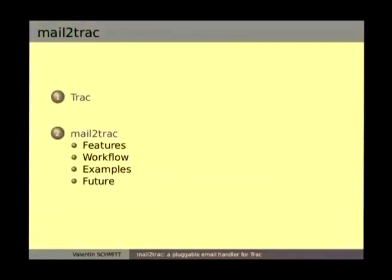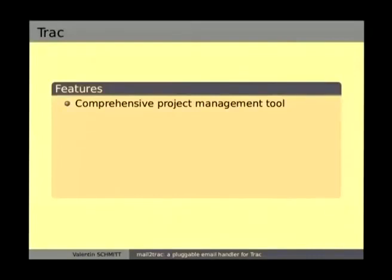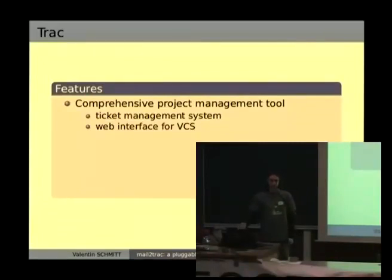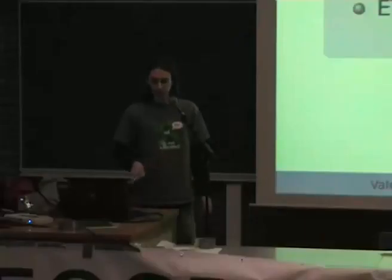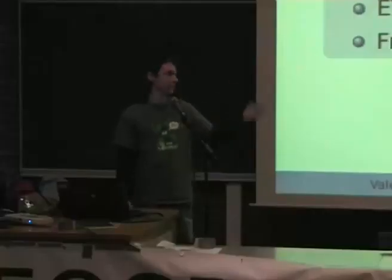I'll start with a quick presentation of Trac, which is a project management tool, and then I'll talk to you about the plugin. Trac is a comprehensive project management tool which has a ticket management system, which is quite convenient. It also has a web interface for VCS like Git, Mercurial, and SVN, among others. It also provides a wiki and much more stuff like a timeline. It's written in Python, which is nice, and it's easily extendable by plugins. Of course, it's free software released under the BSD three-clause license.